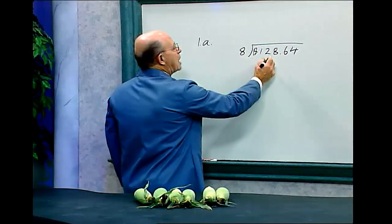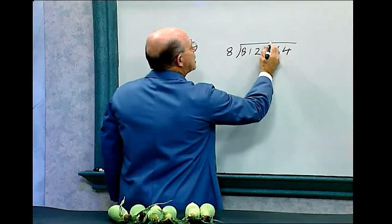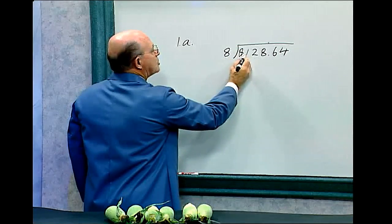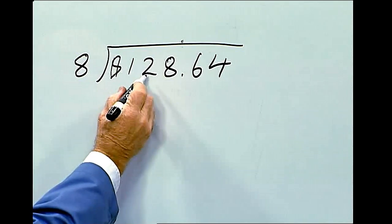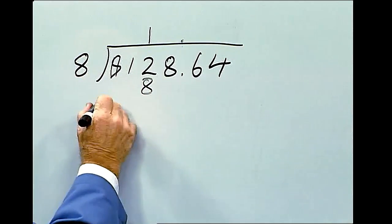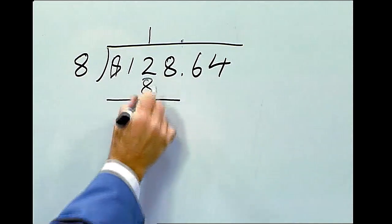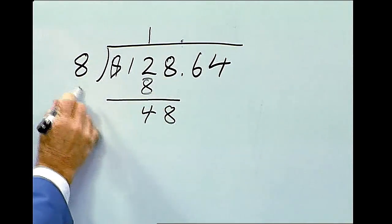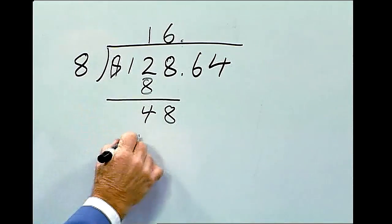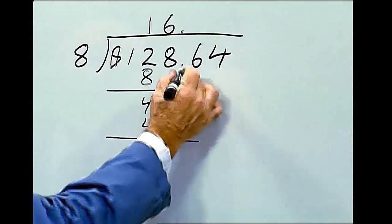Let's do problem 1.8 together. We want to divide $128.64 by eight. Remember — bring up the decimal point in line with the one that's in the problem. Eight doesn't go into one, but eight does go into twelve — it goes one time. Make sure you put this one right above that two. Eight from twelve is four. Now we bring down the eight. Eight goes into forty-eight six times — six times eight is forty-eight — that equals zero.